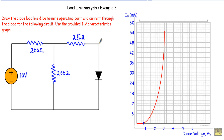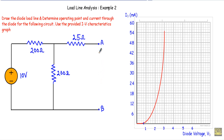Let's say the diode is connected at point A and point B. I have to reduce the entire network across terminals A and B to a Thevenin equivalent circuit. To do that, I first remove the diode from the circuit. After removing the diode, I will calculate the Thevenin resistance RTH with respect to terminals A and B.